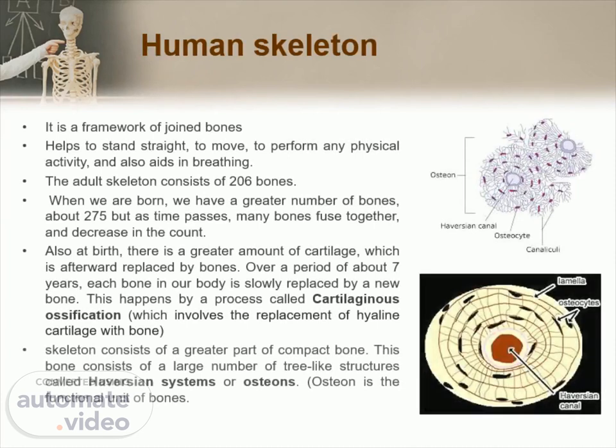Now, what is a human skeleton? It is a framework of joined bones. It helps to stand straight, to move, to perform any physical activity, and also aids in breathing. The adult skeleton consists of 206 bones. When we are born, we have a greater number of bones — about 275 — but as time passes, many bones fuse together and decrease in count.